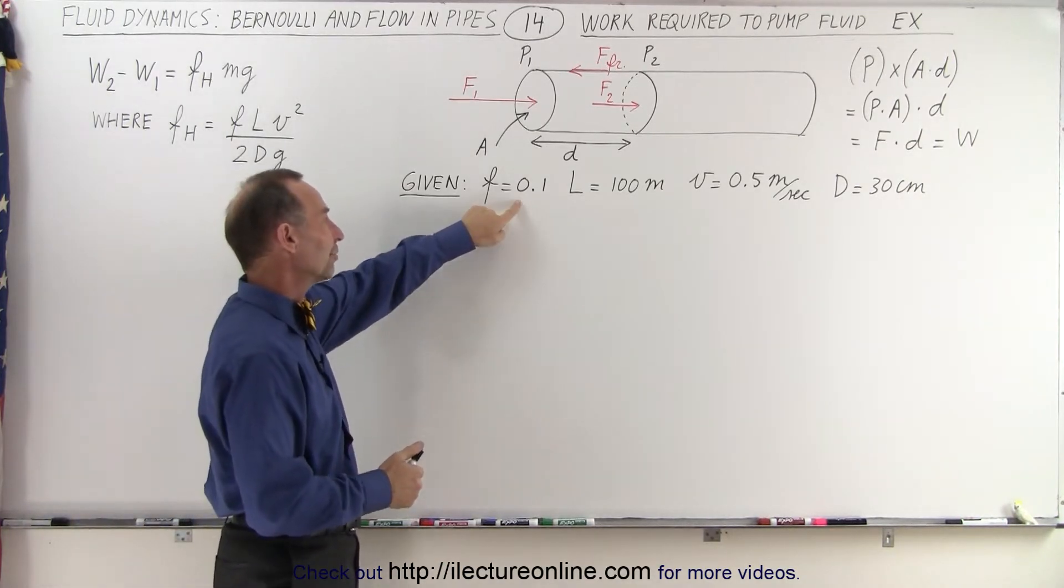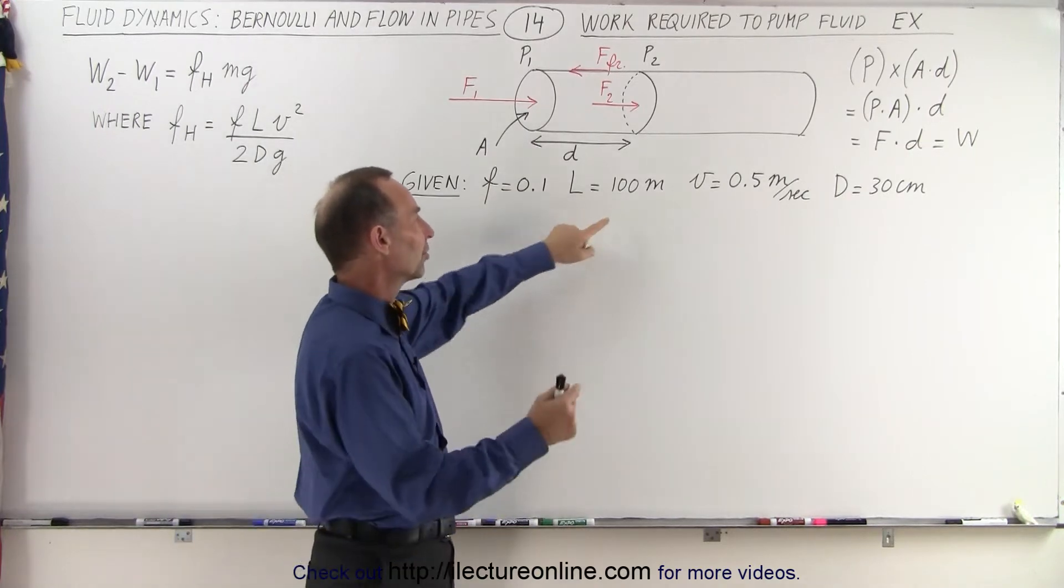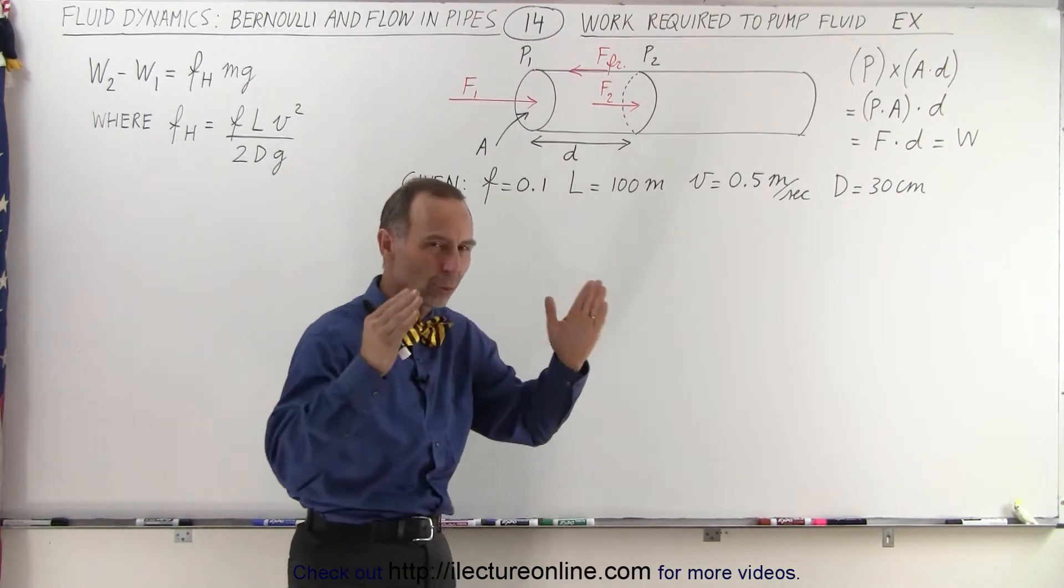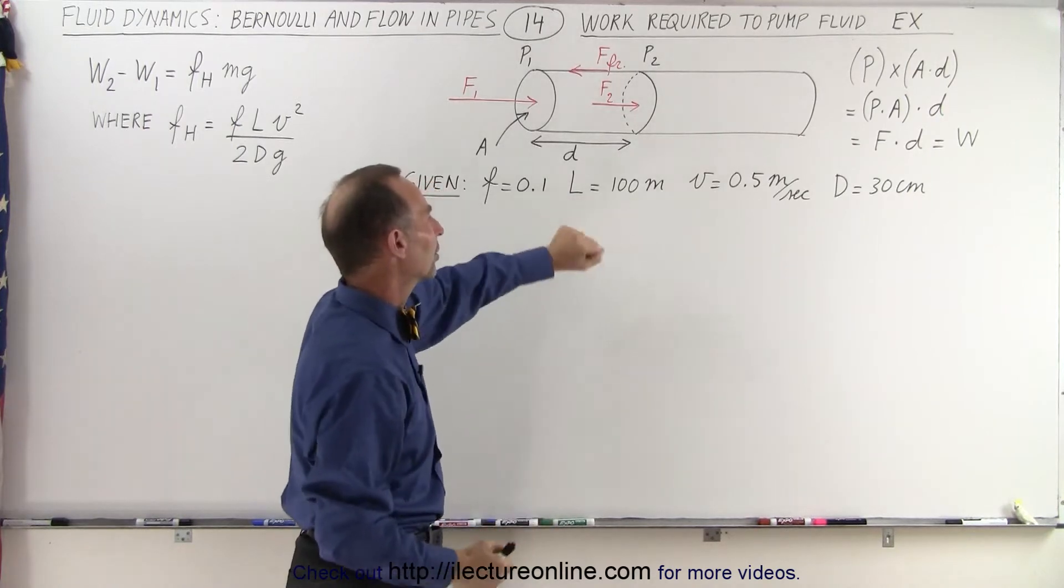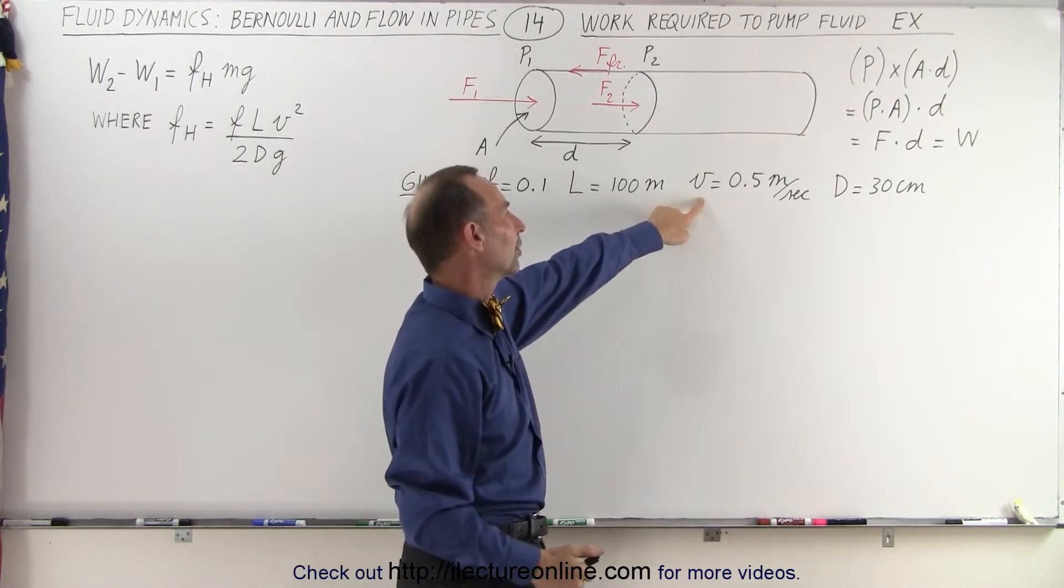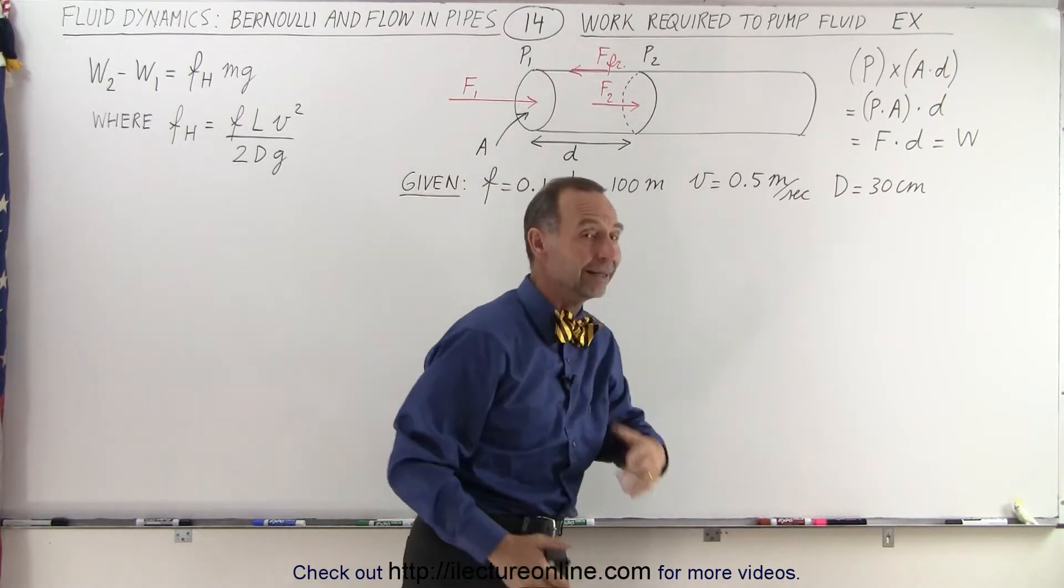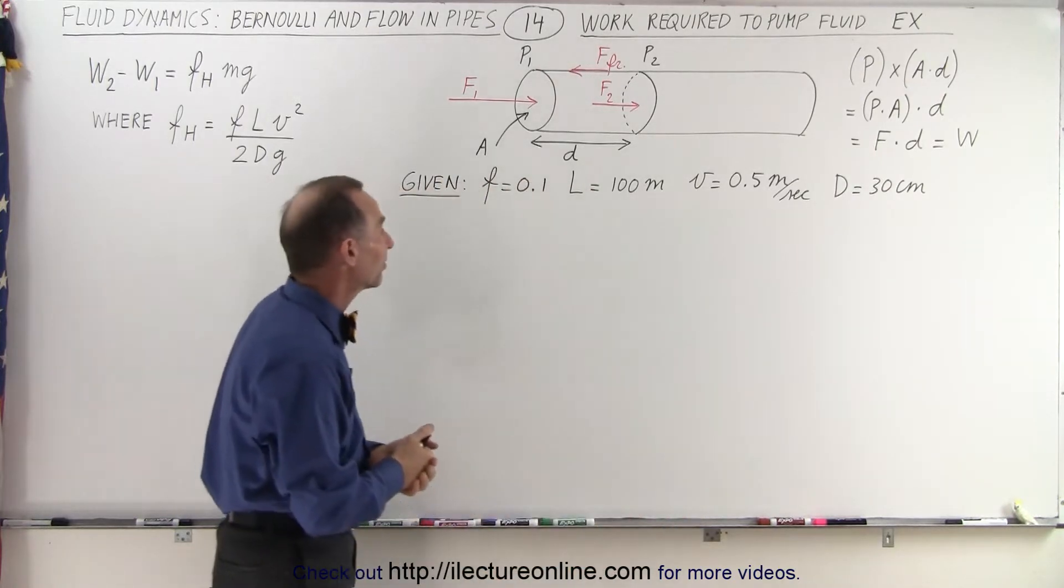Let's say that the fraction is 0.1, the length of the pipe considered is 100 meters, so how much work it takes to move 100 meters of fluid down the pipe 100 meters. The velocity of the fluid is 0.5 meters per second and a diameter about a foot, about 30 centimeters.